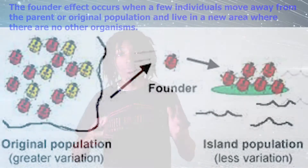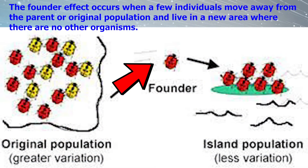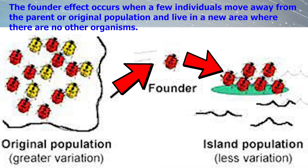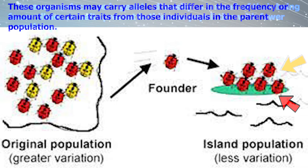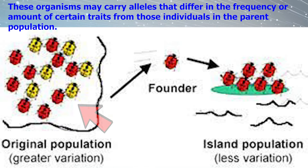Now let's move on to the second type of genetic drift, which is the founder effect. The founder effect occurs when a few individuals move away from the parent or original population and live in a new area where there are no other organisms. This causes a decrease in genetic diversity as a result of there being fewer alleles or traits present in a new population with fewer organisms. These organisms may carry alleles that differ in frequency from those individuals in the parent population.